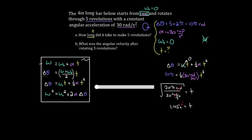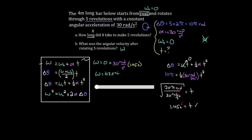Part b asks: what was the angular velocity after rotating five revolutions? Since we now know the time, we know every variable except omega-final, so we can use any of the formulas. The first one is simplest — no squares or ratios. Omega-final equals omega-initial plus alpha times t, which is zero plus 30 times 1.45 seconds. That gives a final angular velocity of 43.5 radians per second — that's how fast the bar was revolving the moment it completed five revolutions.